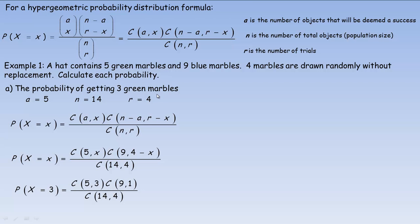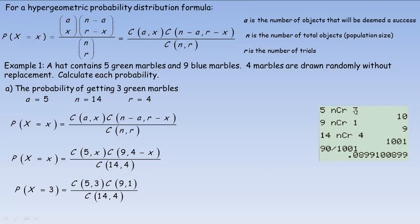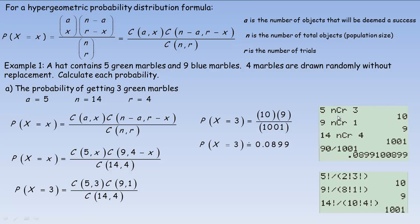We're asked to find the probability of getting three green marbles, so little x equals three. Substituting: five choose three, times nine choose one (since four minus three equals one), divided by fourteen choose four. Five choose three is ten, nine choose one is nine, and fourteen choose four is 1,001. So ten times nine is ninety, divided by 1,001, giving a probability of 0.0899. If you don't have a combination key, five choose three is five factorial divided by three factorial times two factorial, and so on.